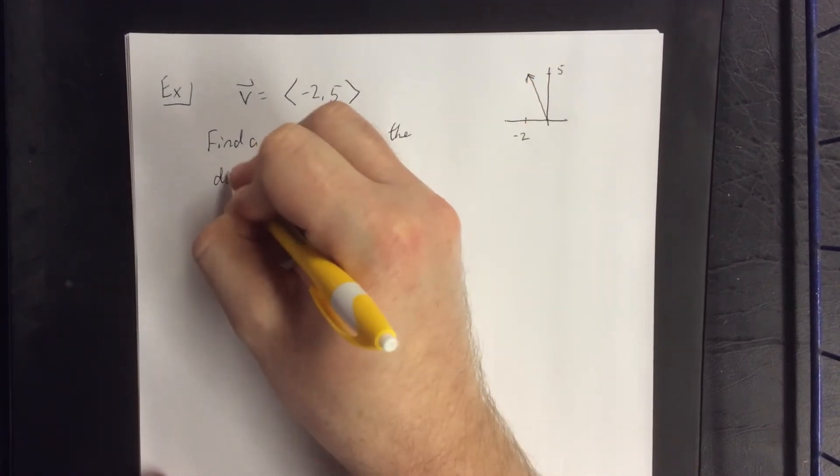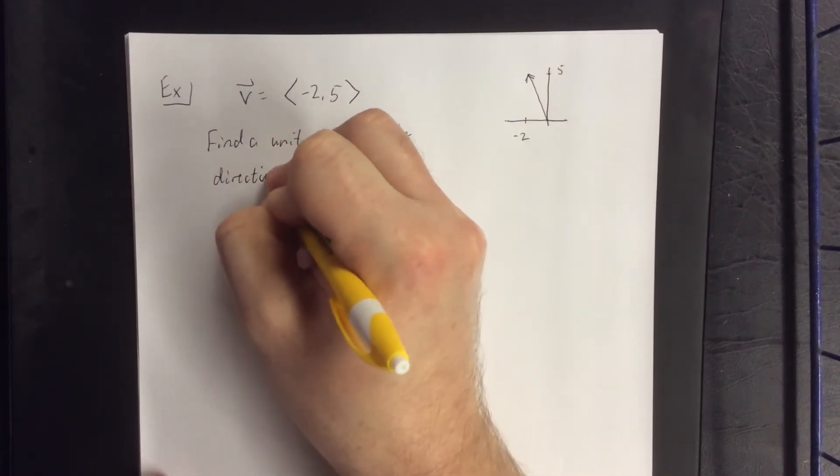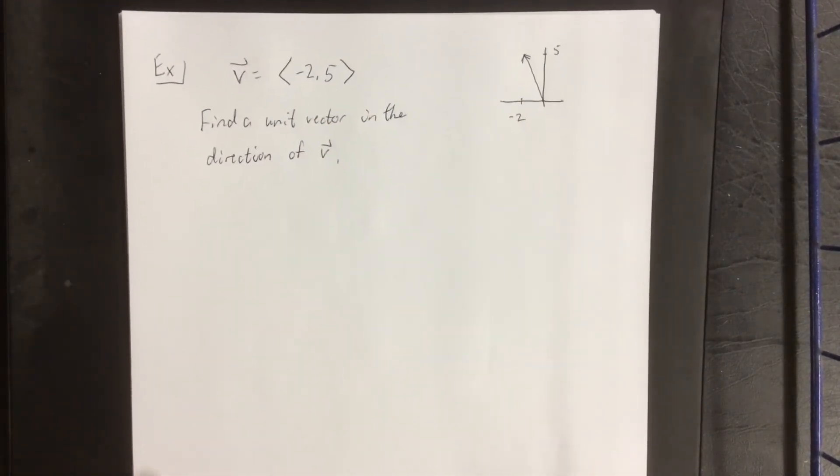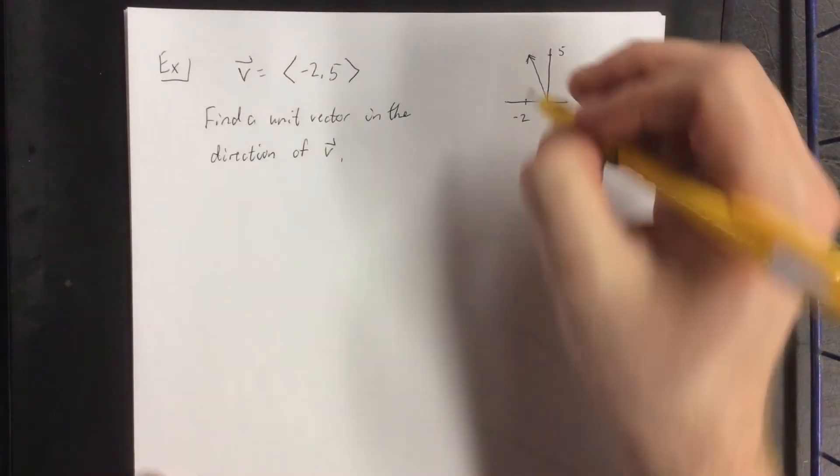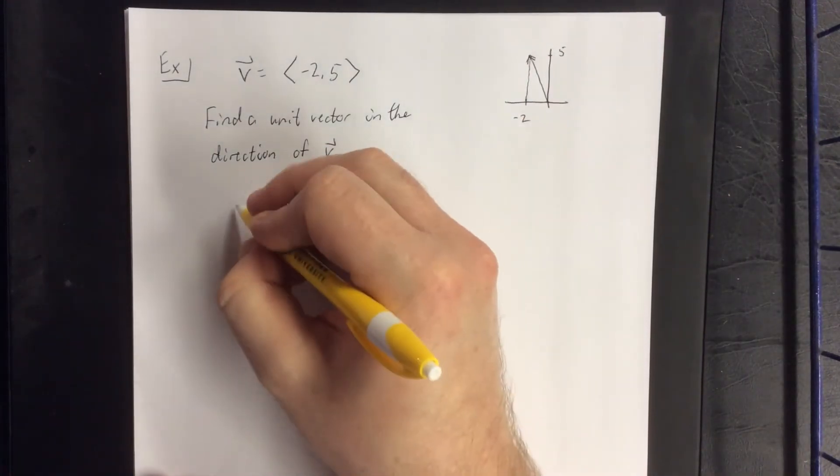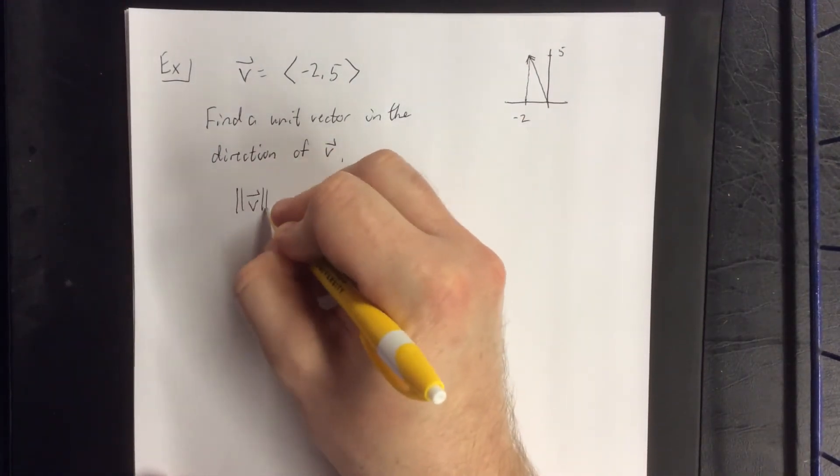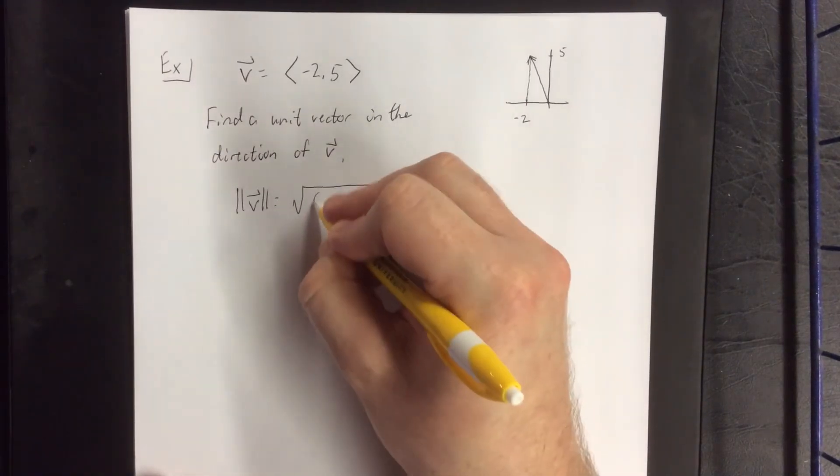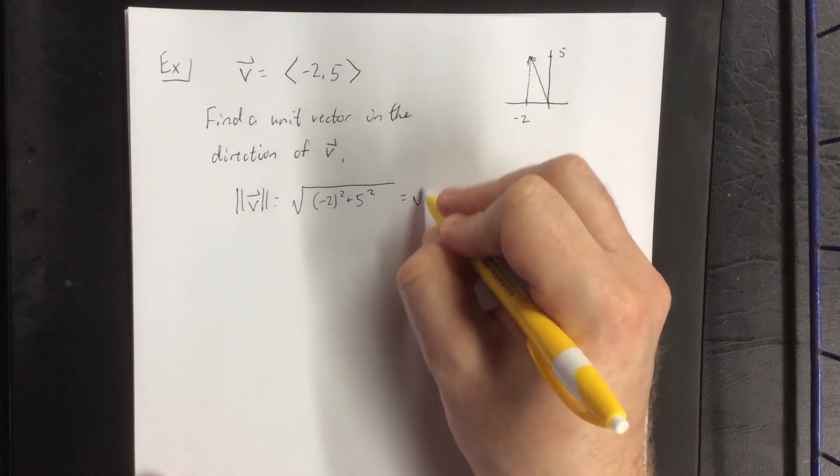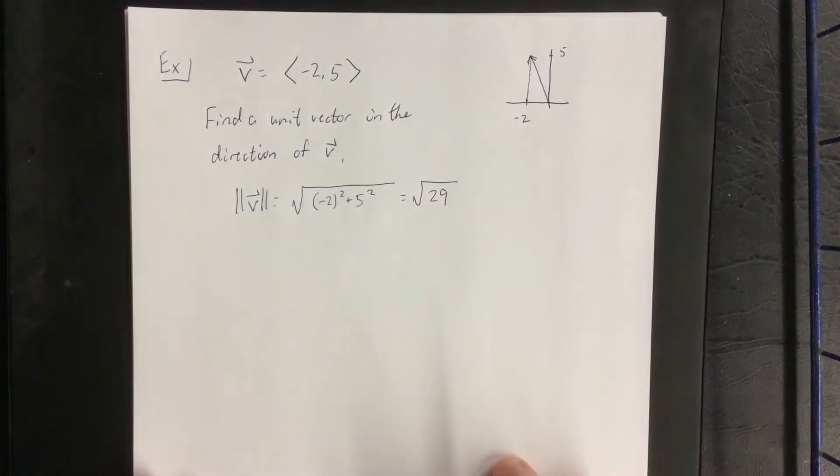What I'd like to do is find a unit vector in the direction of v. We'll start by applying the Pythagorean theorem to find the magnitude of v. Square the -2, square the 5, add them together, and take the square root. That's the square root of 29.